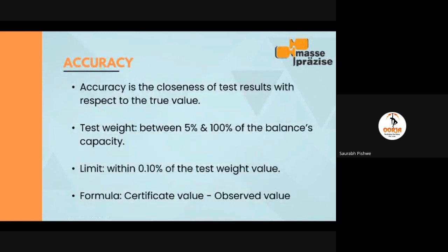The second test is the accuracy test. Accuracy is the closeness of a test result with respect to the true value. The accuracy test is performed using a test weight calibrated from an ISO 17025 accredited laboratory. For the accuracy test, a calibration certificate of the weight is required. Whereas for repeatability, weight calibration is not mandatory, for the accuracy test a calibration certificate is mandatory.